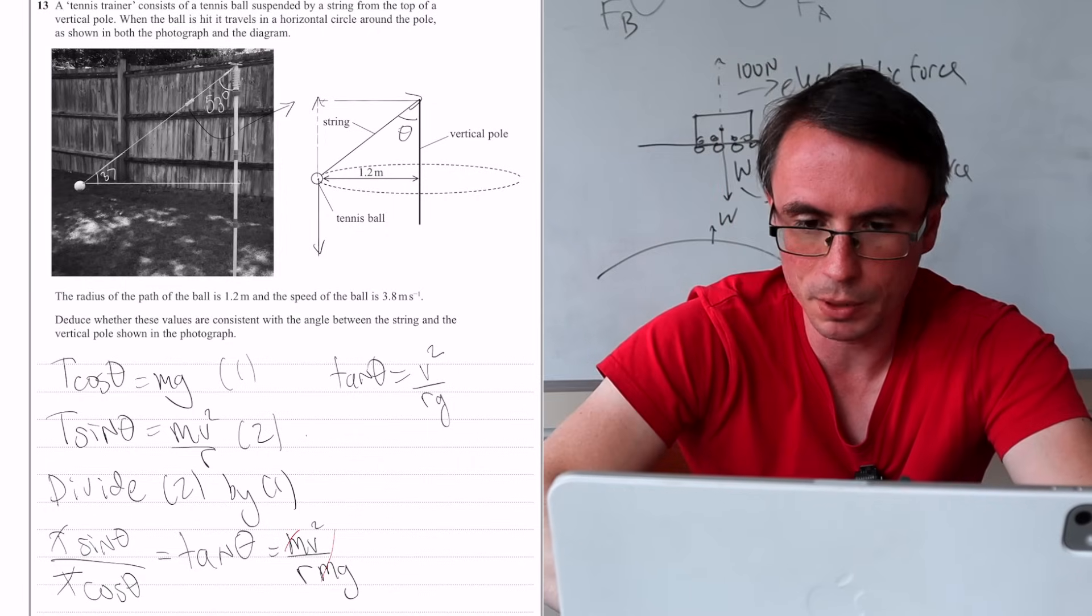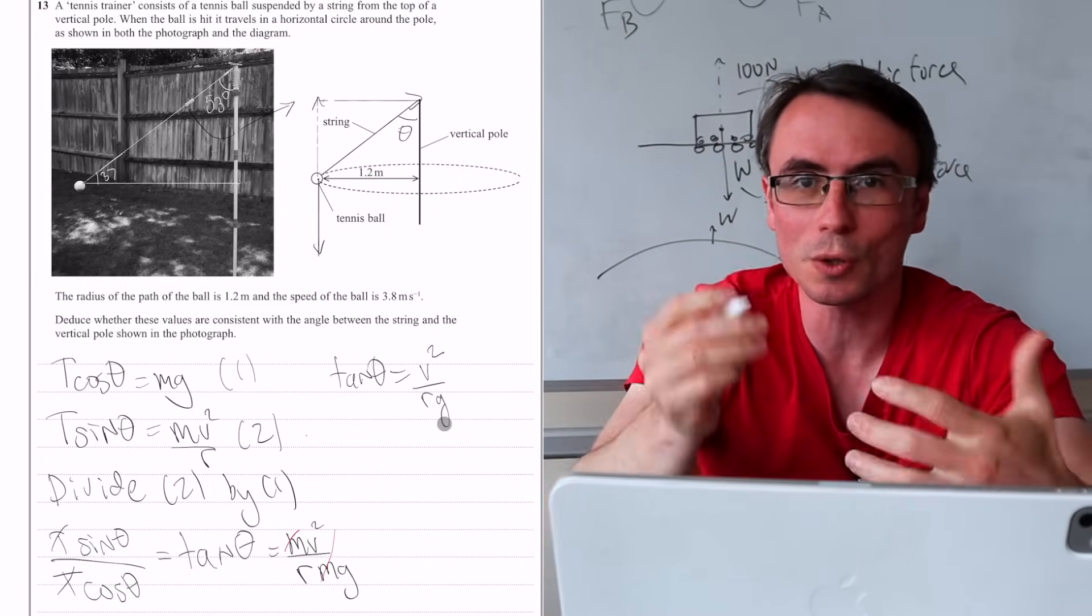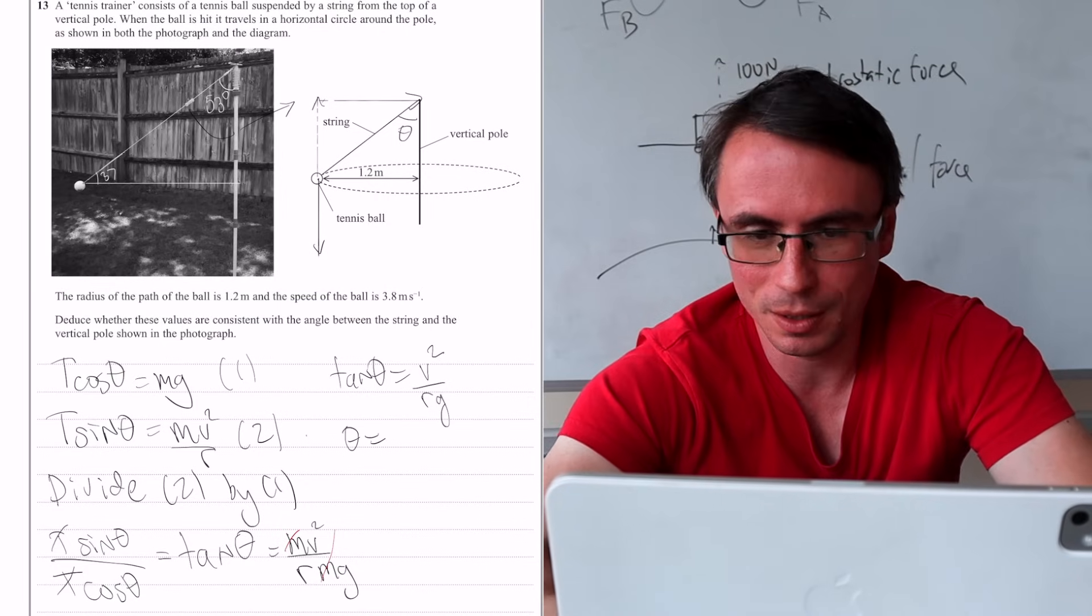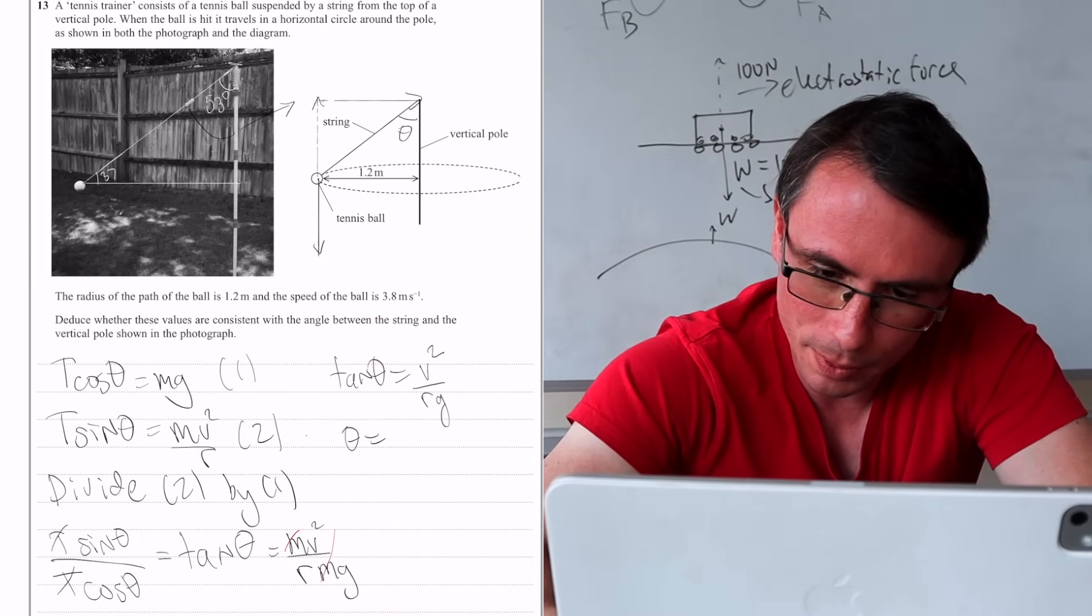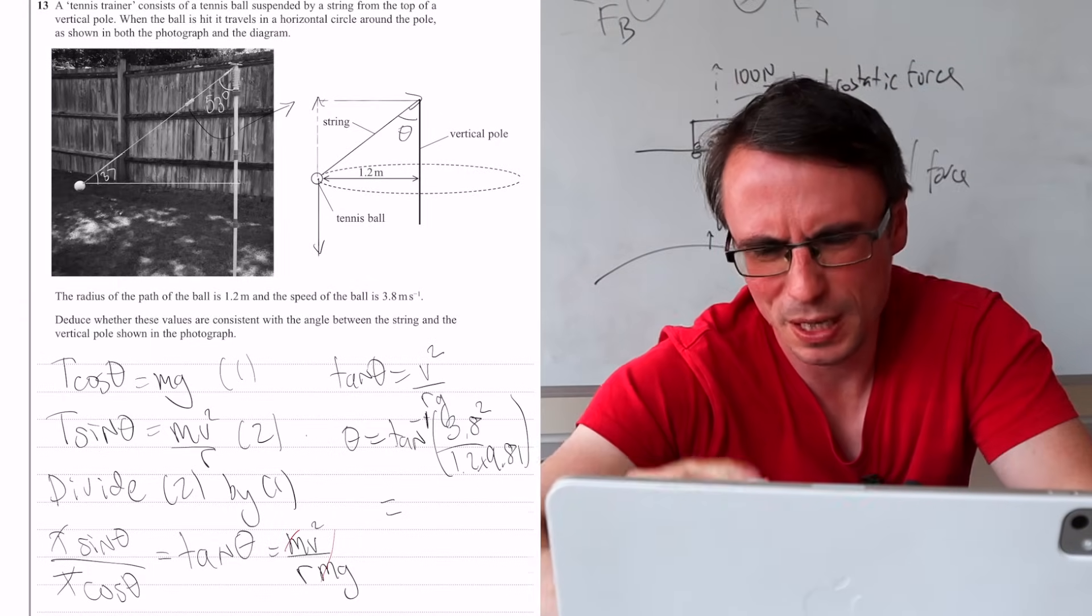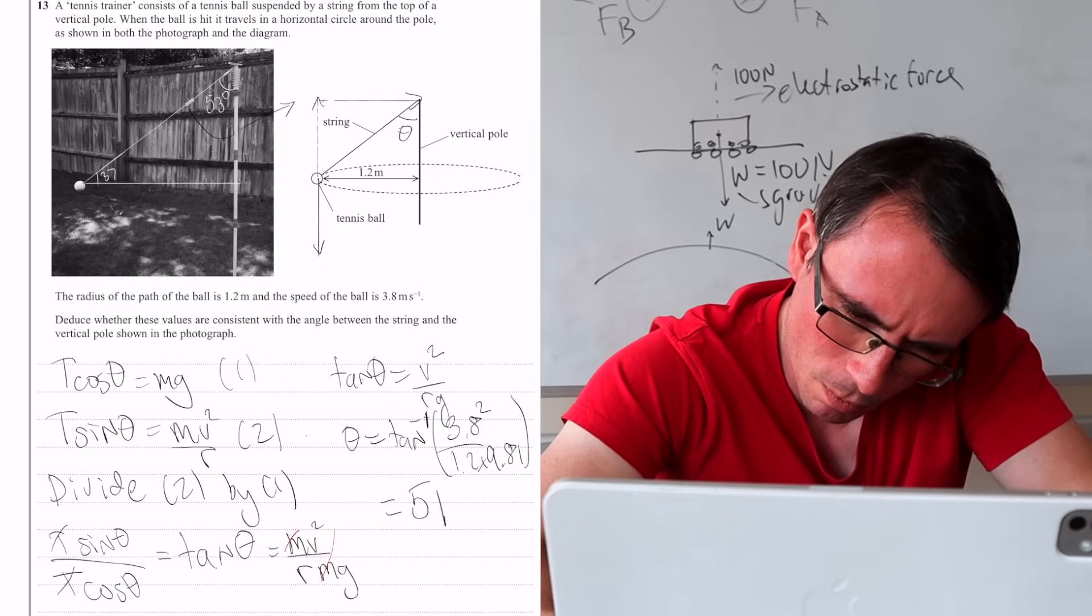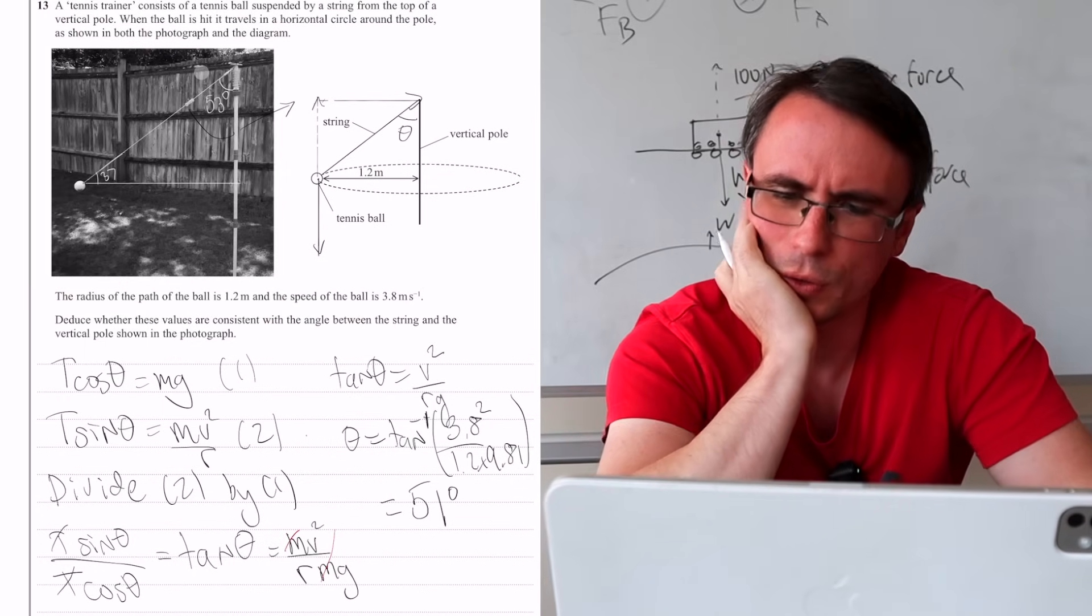How nice is that? We know our speed v, we know our radius, we know g. We can just work out our angle and we can see whether the picture is consistent with our calculation. So theta will be inverse tan of... We get 50.8 which is around 51 degrees. So they're off by around 2 degrees.